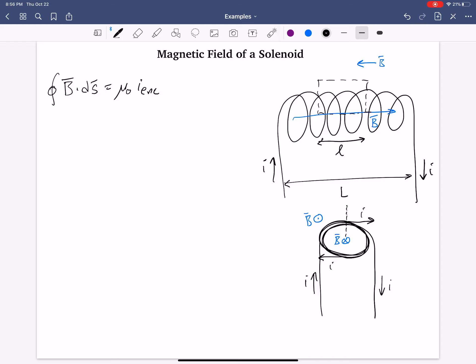So we'll say that that Amperian loop is of length. We'll call it lowercase l since capital L was taken. And I'll actually label each of these sections, right? Each of these segments. So that's one, two is over there, three, and then four is over here.